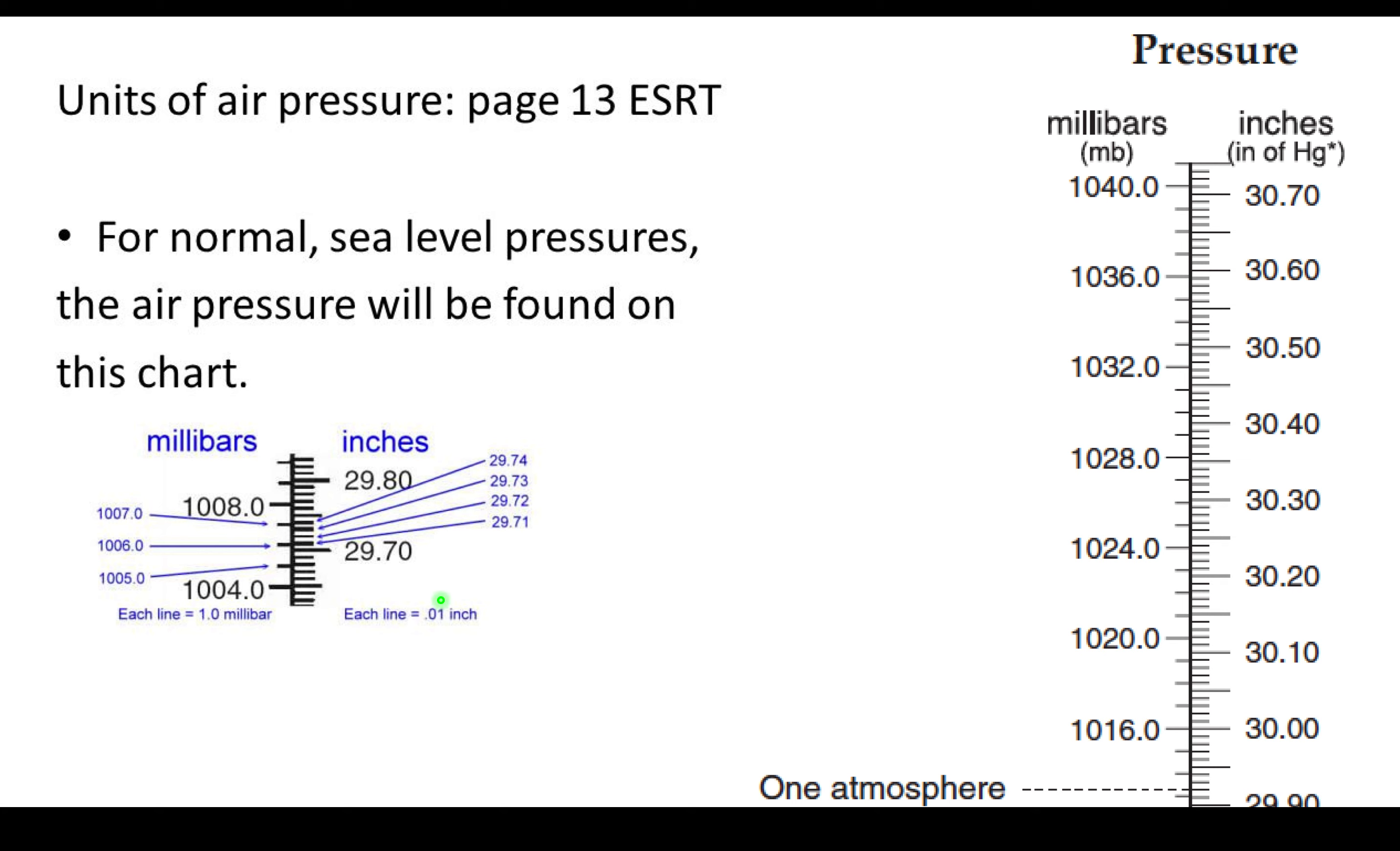So for number five, it says barometric pressure of 1,021 millibars is how many inches of mercury? So 1,021. Here's 1,020. This is 1,021. If we follow it over, it falls on the larger line, halfway between 30.1 and 30.2. So most of you, halfway between 30.1 and 30.2 would be 30.15.